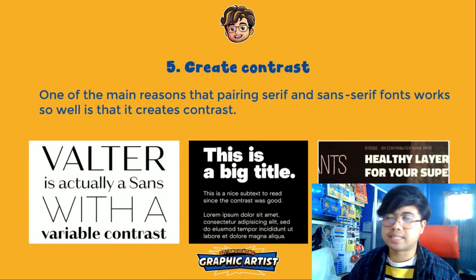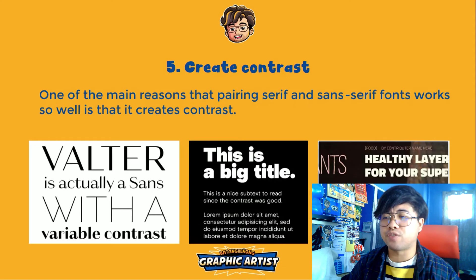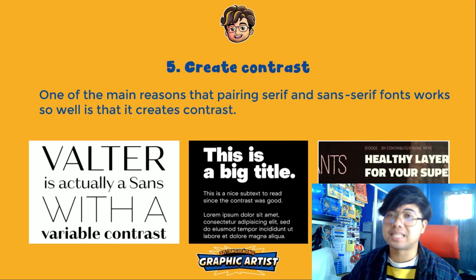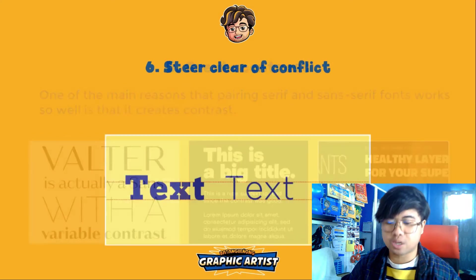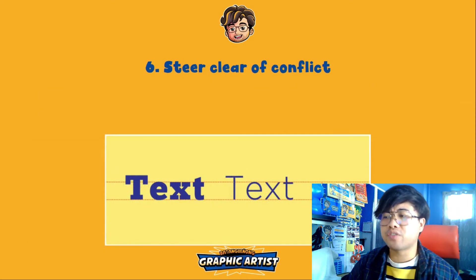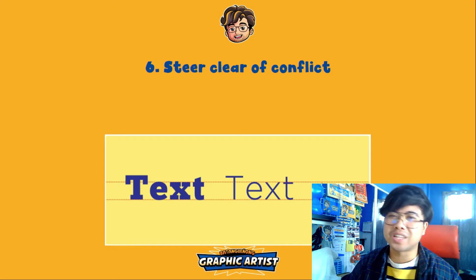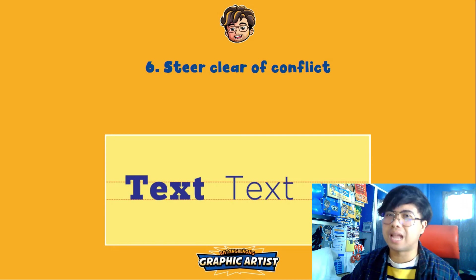Rule six: steer clear of conflict. Line heights and text heights should be consistent — not every word in a different size and color, which looks very unprofessional. Instead of making your project more beautiful, inconsistent sizing makes it look worse. The sizes within a section should be uniform so it looks clean and organized.